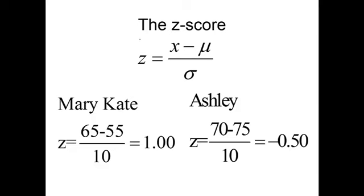To quantify this, we bring in a concept called the z-score. We have a formula: z equals x minus mu over sigma. We calculate Mary Kate's score, 65 minus the average for her section, divided by 10. She gets a standardized score of 1.